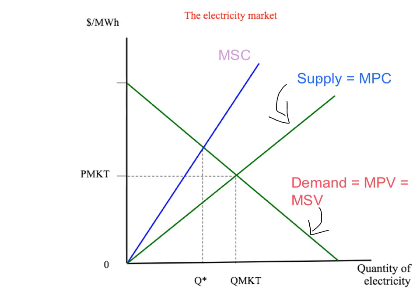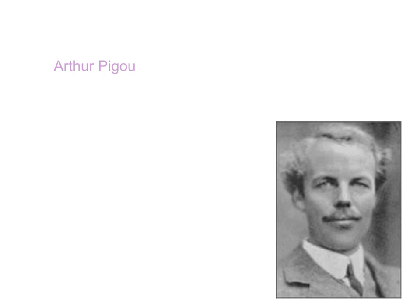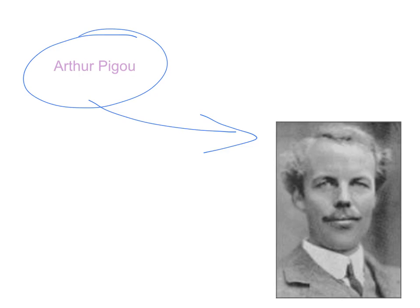We could have the government simply set output quotas on electricity — it could tell electricity generators that they cannot produce more than Q star units. But is there a better solution? Let's go back again to Arthur Pigou. Pigou told us that when there's a positive externality, the government can eliminate the deadweight loss by encouraging production in the marketplace by subsidising the product. But the problem here is a negative externality — we have too much production in the marketplace. How can the government get the market to reduce the amount it produces? Easy: tax the relevant product. We can put a Pigouvian tax on electricity to reduce the amount that is traded in the marketplace and bring the quantity back to the socially optimal level.